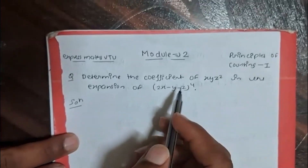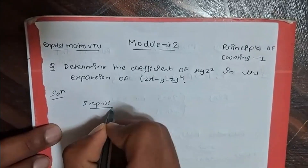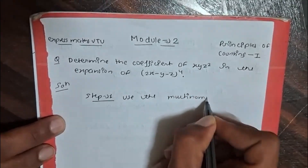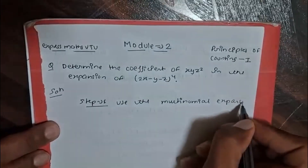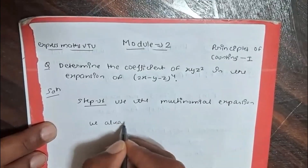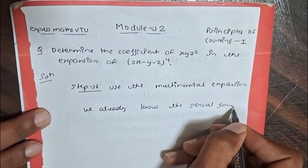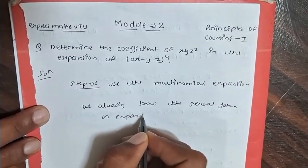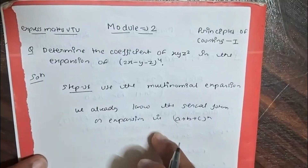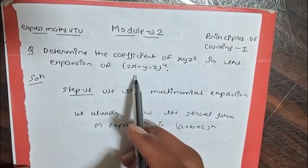In this question, we are going to find the coefficient of x·y·z² in the expansion. Our first step is to use the multinomial expansion. The general form of the expansion is (a + b + c) to the power n, and by the help of this general form we can find the required coefficient.